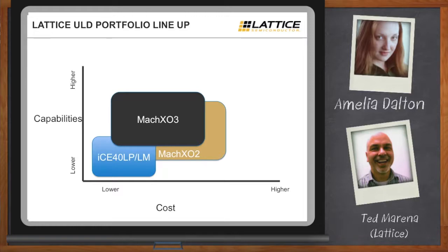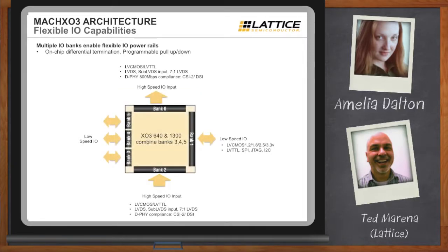Looking at the XO3 architecture specifically — we designed the I/O rings to support both single-ended and high-performance interfacing. We didn't put high-performance interfacing on all pins because that drives cost up, but in banks zero and two we have very high-performance interfaces in and out. The remaining banks use more traditional single-ended, lower-speed interfaces — a mix that supports many of the mobile buses we've been discussing.